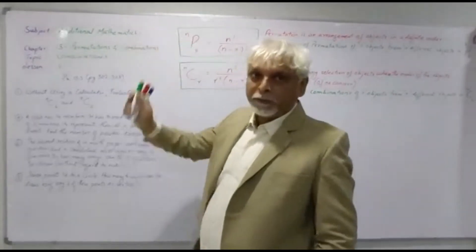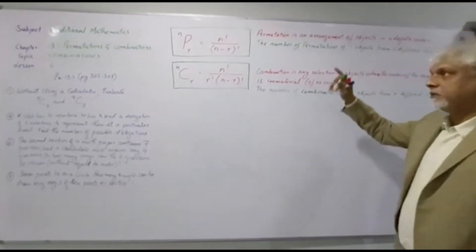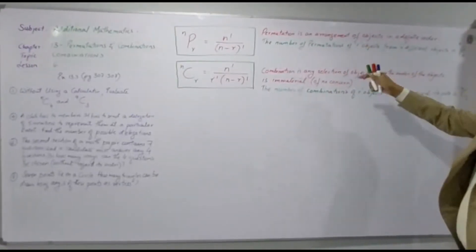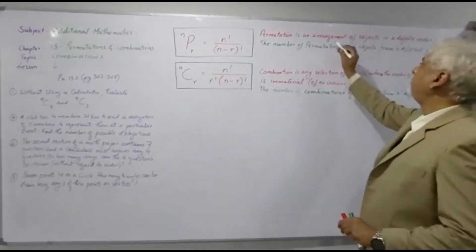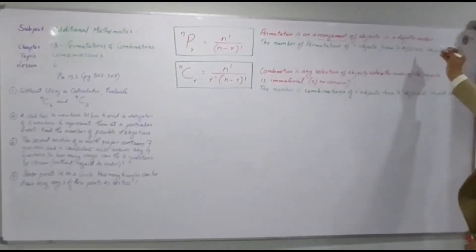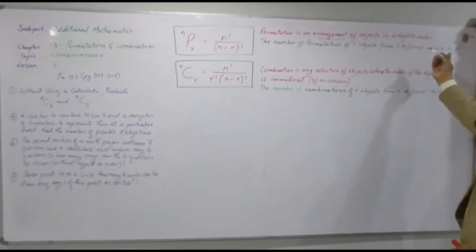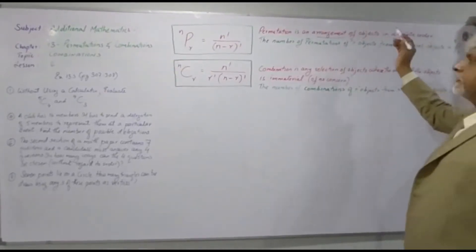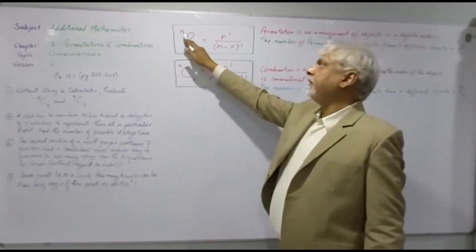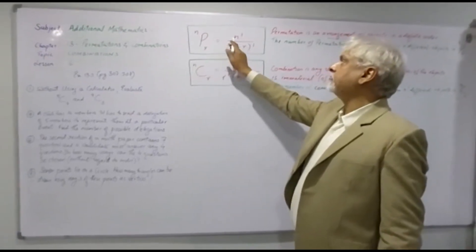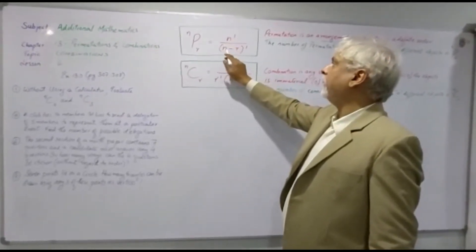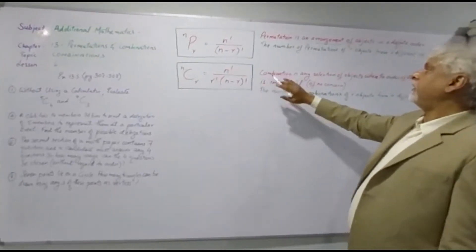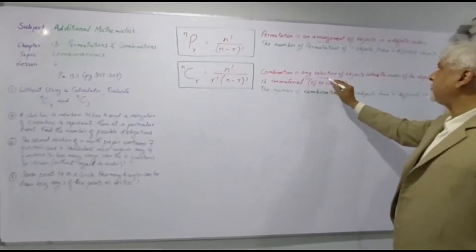Before I do that, first understand the difference between permutation and combination. Permutation is an arrangement — the key word here is arrangement — of objects in a definite order. The number of permutations of r objects from n different objects is given by: P(n, r) equals n factorial over (n minus r) factorial.